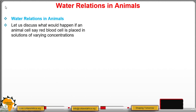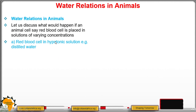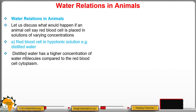We want to look at what would happen if an animal's cell — for example, a red blood cell — is placed in solutions of varying concentrations. For instance, if a red blood cell is placed in a hypotonic solution, such as distilled water — remember, distilled water has a higher concentration of water molecules compared to the red blood cell cytoplasm.